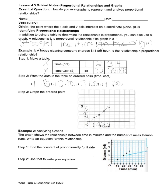And another way to think about this is if it passes through the origin, which is (0,0), well I can ask myself: if I clean for 0 hours, would you get paid $45 or would you get paid $0? And I would say 0 hours would result in $0. So this is a proportional relationship according to this graph.